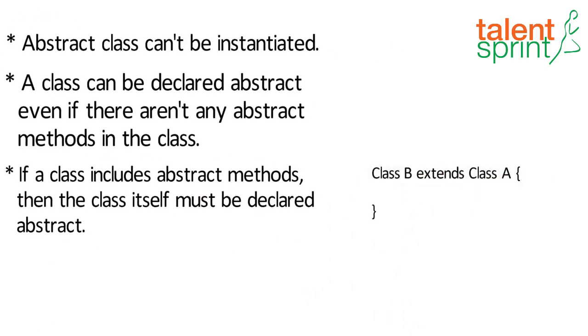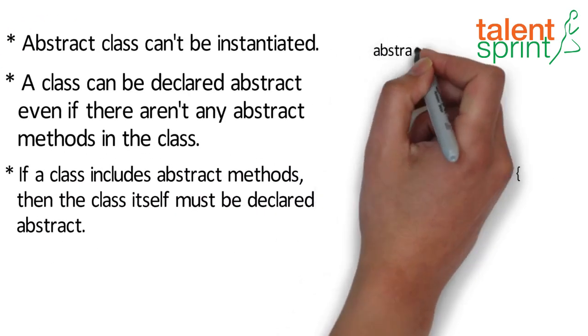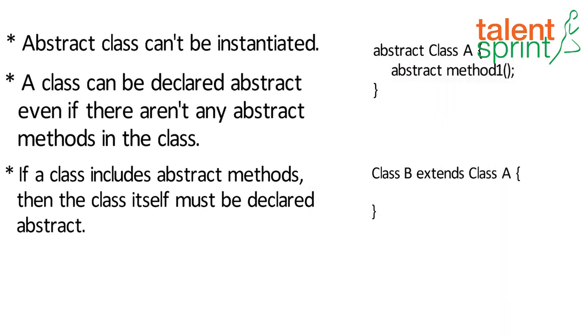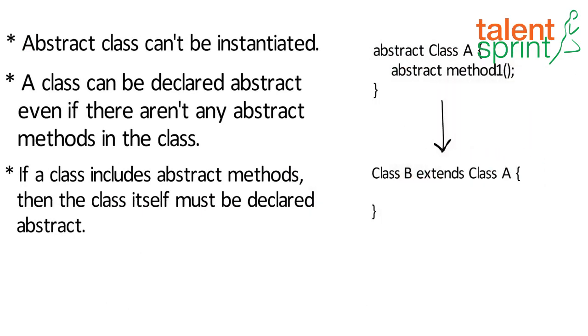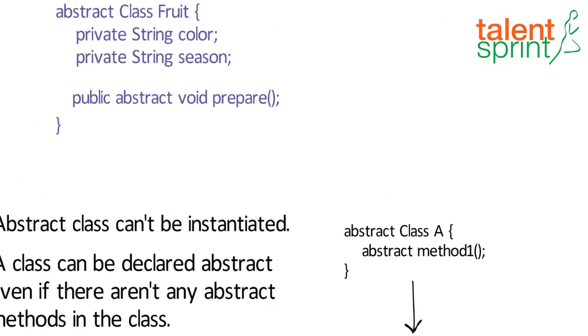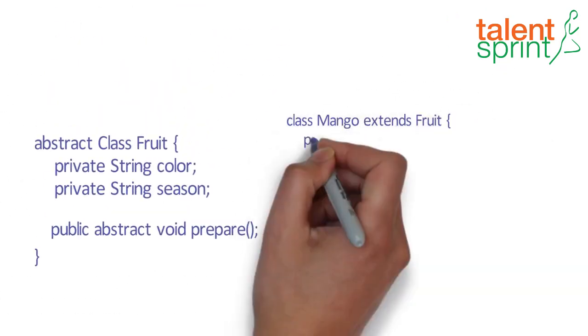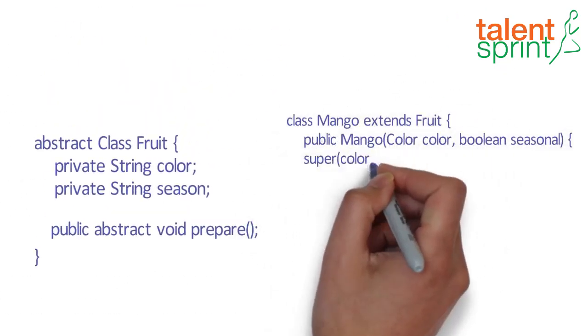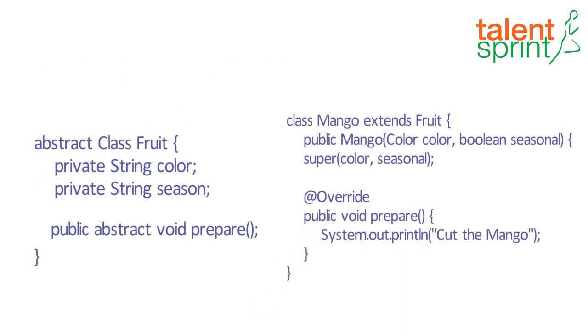Whenever we create a concrete class by extending an abstract class, all abstract methods must be overridden and given a body. So if we have a class Mango that extends class Fruit, we need to provide a method body to the abstract method in the Fruit class. Always remember that anything abstract in Java — be it a method or a class — is not complete.